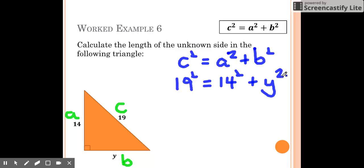19 squared equals 361 - check it on your calculator if you don't believe me. 14 squared is 196, and Y squared we don't know.